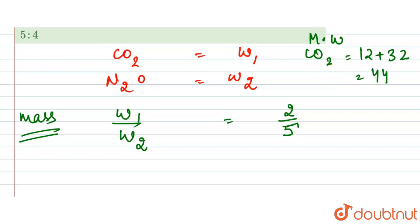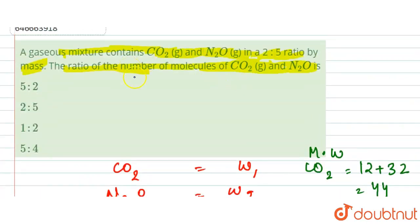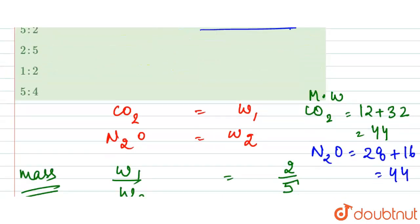And if we calculate for the N2O, it will be 28 plus 16, so that is also 44. So now here, what we need is the ratio of the number of molecules.